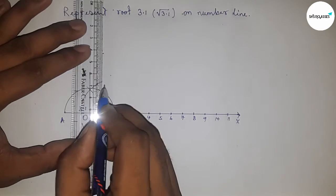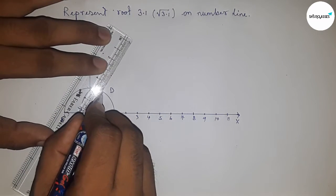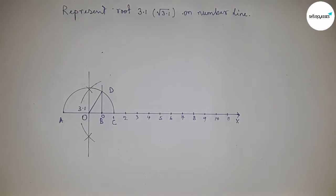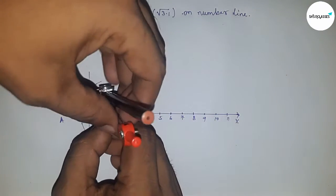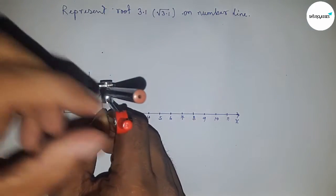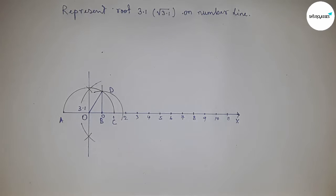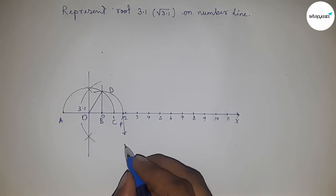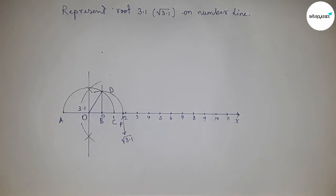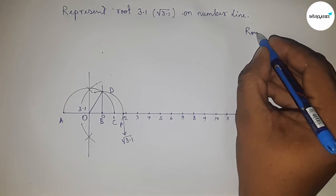Join this line which meets the semicircle at point D. Next, join O and D. Now take the distance BD with a compass and draw an arc which meets the number line at point P. This is the representation of root 3.1 on the number line. Now let's discuss the back calculation of root 3.1.